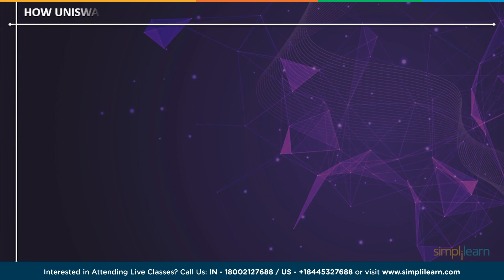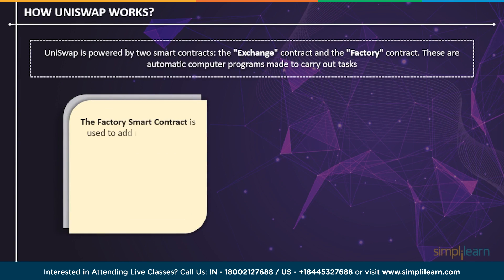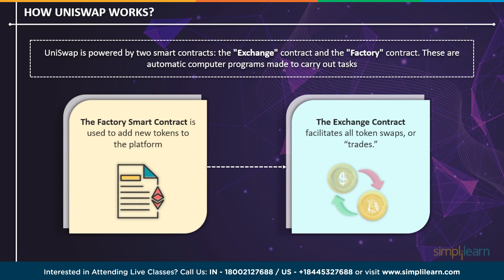The Uniswap platform enables the decentralized trade of numerous digital assets using smart contracts built on the blockchain through liquidity pools, which utilize smart contracts to automatically rebalance themselves after each trade — pairs of digital assets are exchanged. Uniswap is powered by two smart contracts: the exchange contract and the factory contract. These are automatic computer programs made to carry out particular tasks when certain criteria are met. The factory smart contract is used to add new tokens to the platform, while the exchange contract handles all token swaps or trades. On Uniswap version 2, any ERC-20 based token can be exchanged for another.